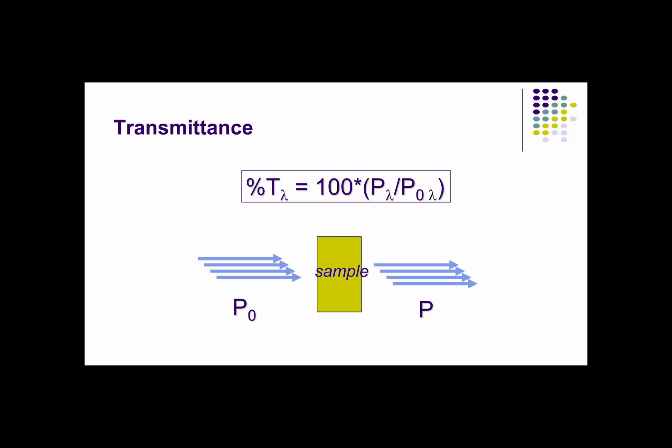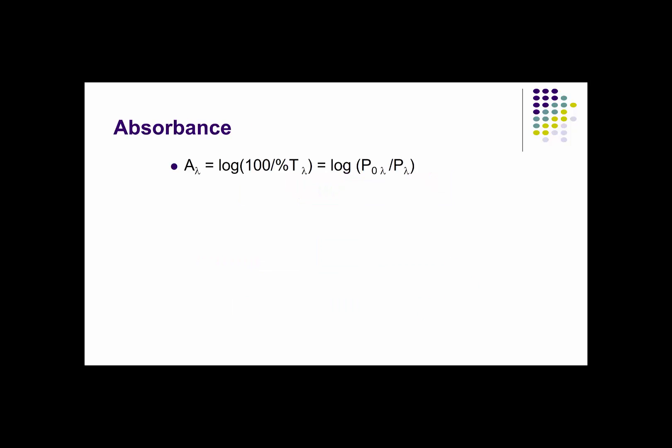Formally, the percent transmittance, or percent T, at any wavelength lambda, is given by the equation at top. Percent T equals 100 times the ratio of P sub lambda divided by P naught lambda. In physics and chemistry, we use the term power to represent the number of photons per second incident on a surface, and that's what the P refers to in the strictest sense on this slide.